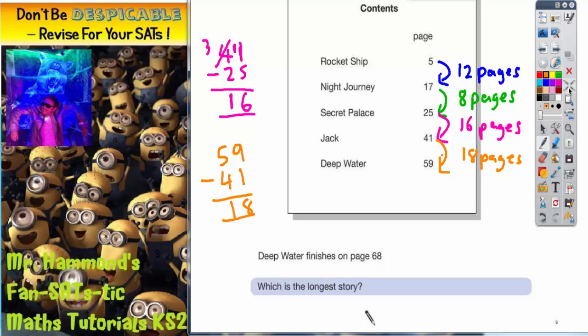Now what we haven't done yet is we haven't used this information. Deep water finishes on page 68. So this 68 is missing from down here because the only one we haven't found is how long deep water is. So from 59 to 68, if you add on 1 to get to 60 and then another 8 to 68, that's 1 plus 8. So that's going to be 9 pages long.